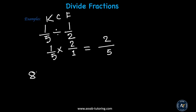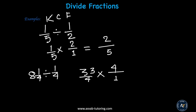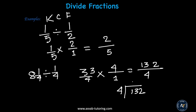Let's try: 8 and 1 over 4 divided by 1 fourth. First convert the mixed number: 8 times 4 is 32, plus 1 is 33 over 4. Apply Keep-Change-Flip: keep 33 over 4, change to multiplication, flip 1 fourth to 4 over 1. Multiply: 33 times 4 is 132 over 4. Convert: 4 goes into 13 three times — 3 times 4 is 12, remainder 1. Bring down 2; 4 goes into 12 three times. The answer is 33.